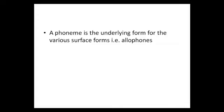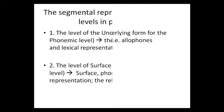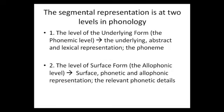In phonology, it is assumed that the segmental representation is not at one level, but at two levels. The first level is called the underlying level, or the phonemic level, since it represents the underlying abstract and lexical representation, or the phoneme. The second level is called the surface level, or the allophonic level, as it represents surface phonetic and allophonic representation, as it is the level at which the sounds with all the relevant phonetic details are represented.